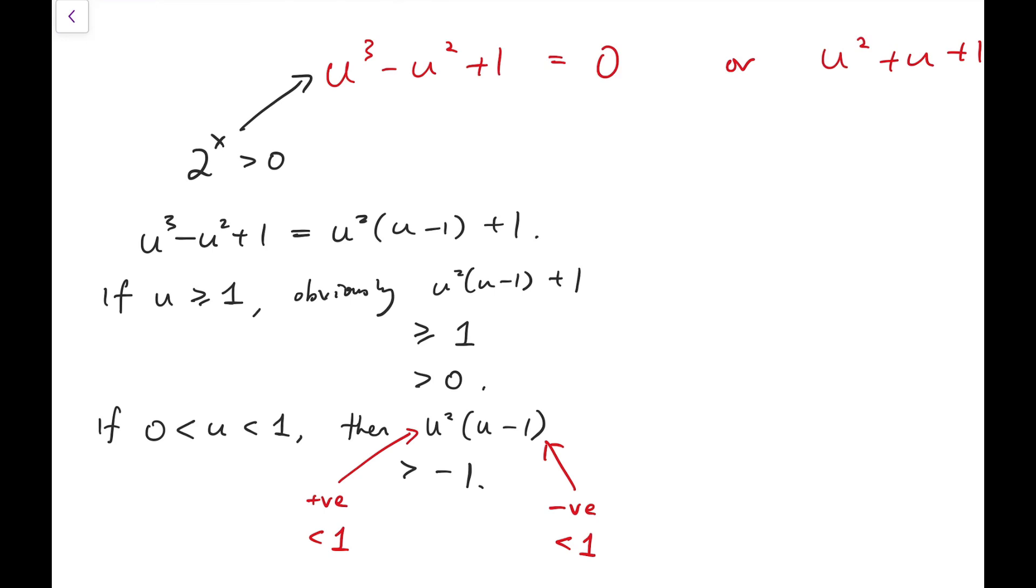But ignoring the sign, it's just a decimal that is between 0 and 1. So it must be greater than minus 1. And so we have u cubed minus u squared plus 1 is always positive. So no solution for this part.